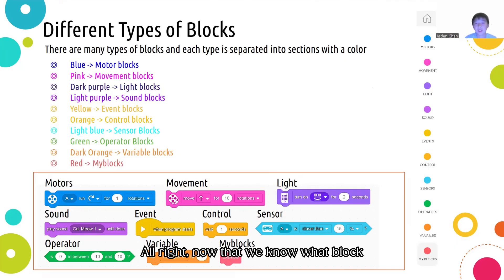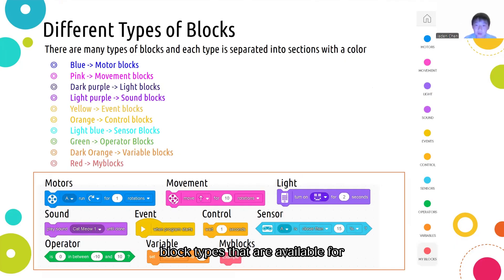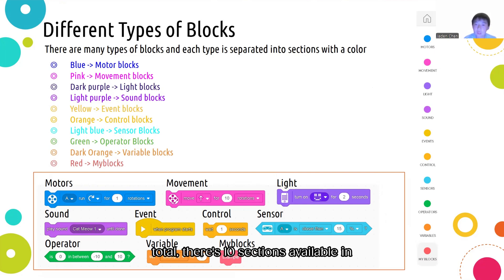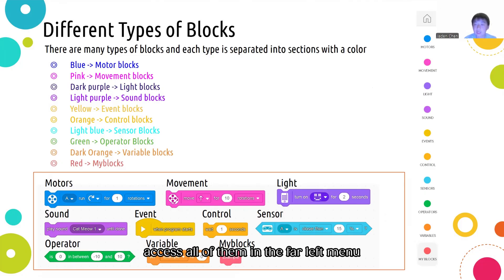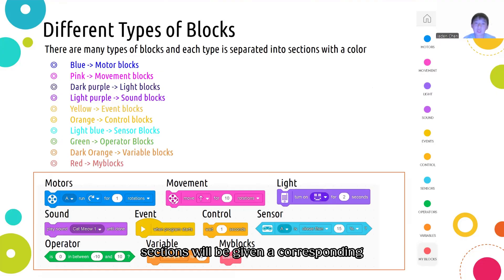Now that we know what block coding is, let's talk about the different block types available for programming the Spike Prime robot. In total, there are 10 sections available in your programming workspace, and you can access all of them in the far left menu of your workspace. Each of the sections will be given a corresponding color, which is listed out below.